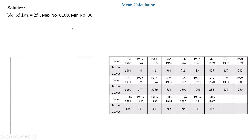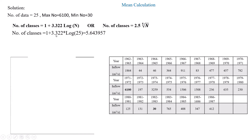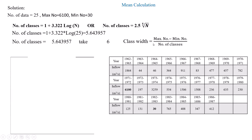First, let's calculate the number of classes using the formula: number of classes = 1 + 3.322 × log(n), where n is the number of data points. For n = 25, this equals 5.64, so we take 6 as the number of classes. The class width equals (maximum − minimum) ÷ number of classes = 1011.667, which we round to 1012.